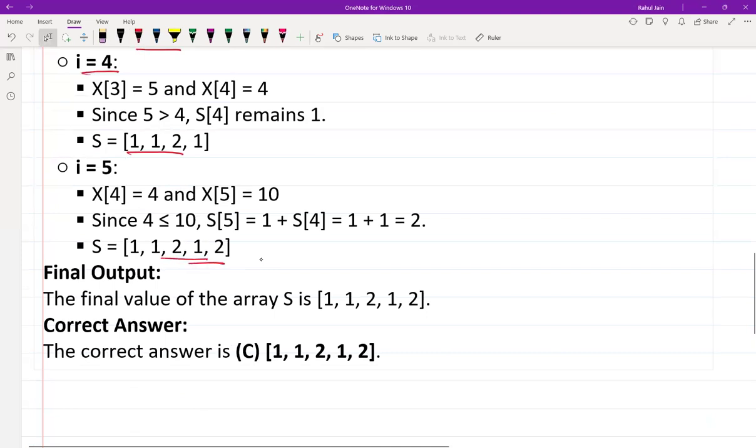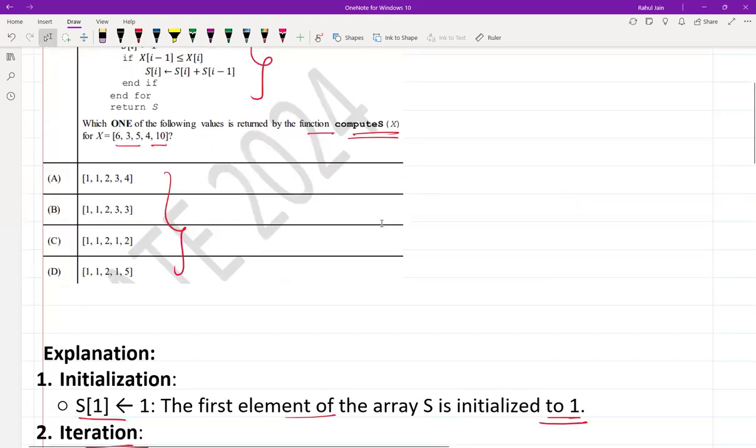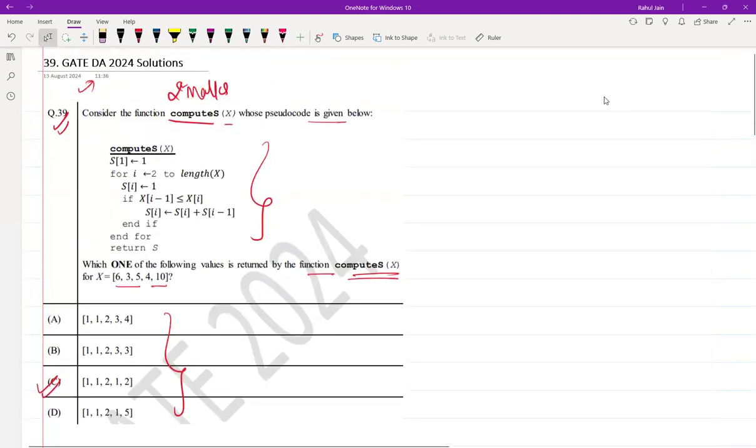So the final value of the array will be [1, 1, 2, 1, 2]. Thus option C, option C is the correct answer for this GATE DA question. I hope it will help you.